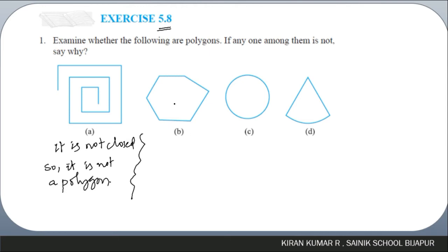The second figure is a closed figure with many sides, so it is a polygon. Option C is a circle — it is not made up of line segments but of a curve. Though it is a closed figure, we do not consider it a polygon.